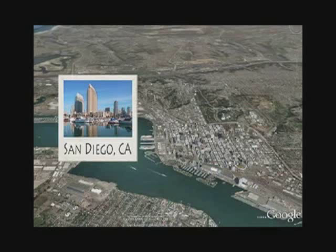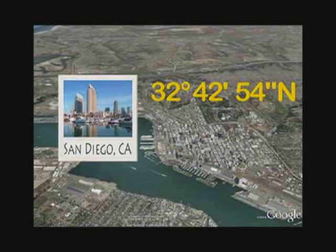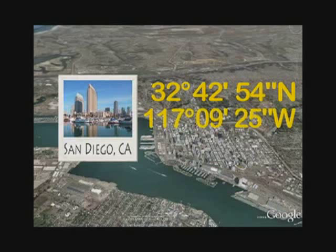Using latitude and longitude, the precise location of San Diego can be written as 32 degrees, 42 minutes, 54 seconds north latitude, 117 degrees, 9 minutes, 25 seconds west longitude.